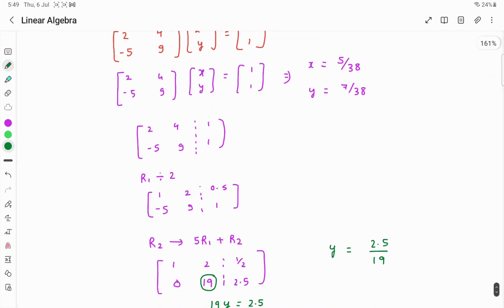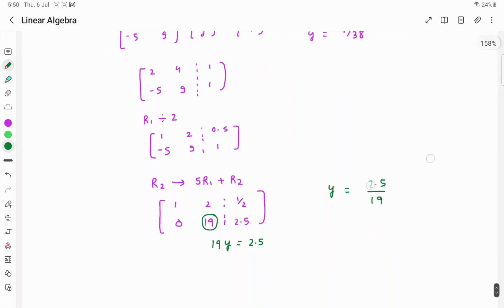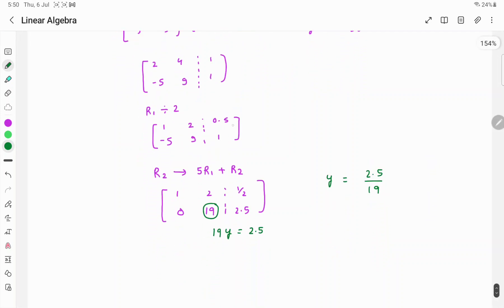Here I have written 1 plus 2.5 is 3.5. So it will be 3.5 only. If you do this, you will get 7 by 2 upon 19, which is equal to 7 by 38.